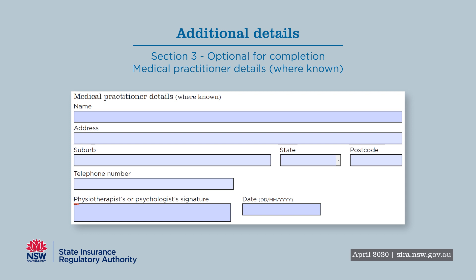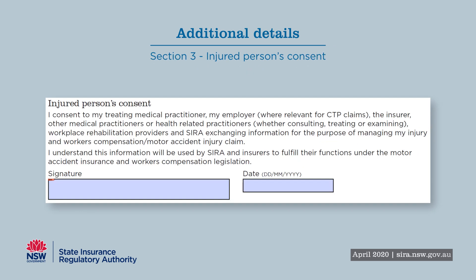Where known, it is helpful to provide the medical practitioner details. This is where you obtain the person's written consent for the form and the information on it to be exchanged with other parties — such as their medical practitioner or insurer — for the purpose of managing the person's injury and workers' compensation or motor accident injury claim.